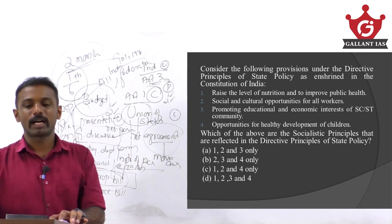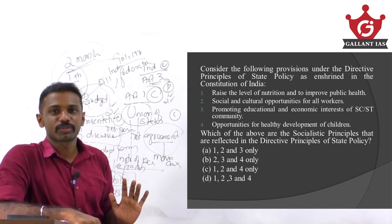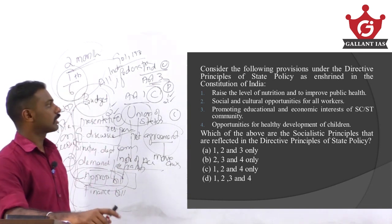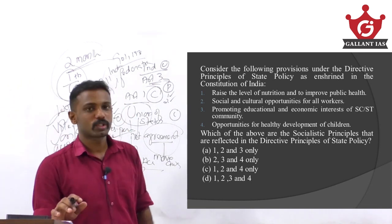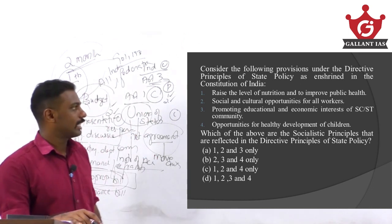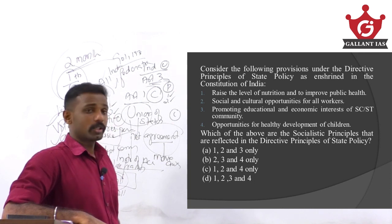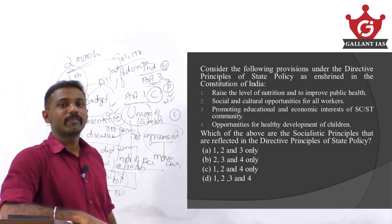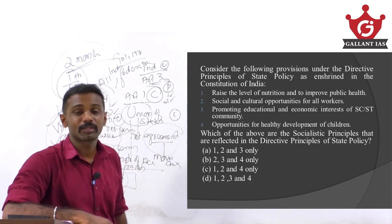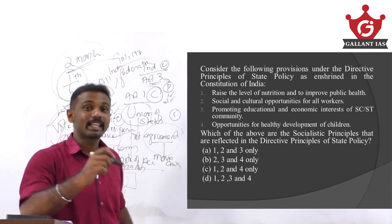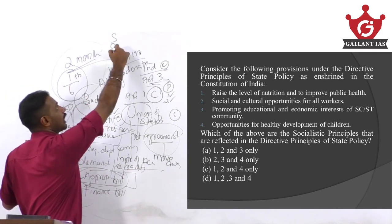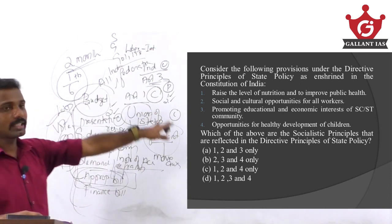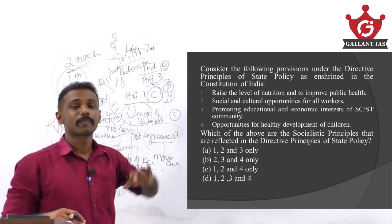Consider the following provisions under the Directive Principles of State Policy as enshrined in the Constitution of India: 1) Raise the level of nutrition and improve public health; 2) Social and cultural opportunities for all workers; 3) Promoting education and economic interest of SC/ST community; 4) Opportunities for healthy development of children. Which of the above are the socialist principles reflected in the DPSP? When we study DPSP, even though the Constitution does not classify them as such, we can classify DPSPs into socialist principles, Gandhian principles, or liberal intellectual principles.